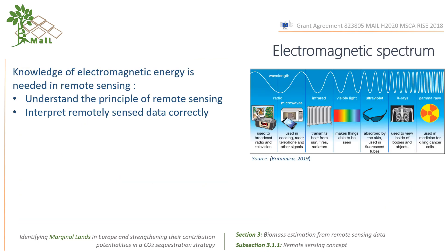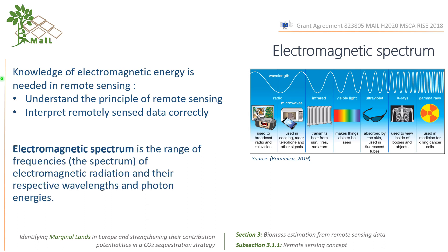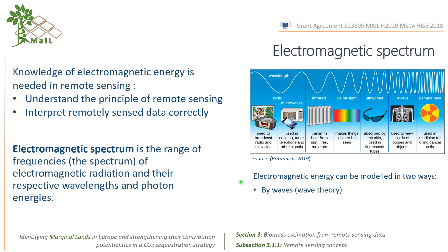Knowledge of electromagnetic energy is needed in remote sensing to understand the principle of remote sensing and to interpret remotely sensed data correctly. The electromagnetic spectrum is the range of frequencies of electromagnetic radiation and their respective wavelengths and photon energies. Electromagnetic energy can be modeled in two ways: by waves and by energy-bearing particles called photons.